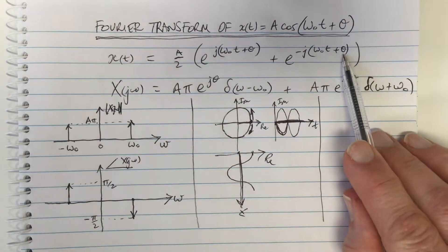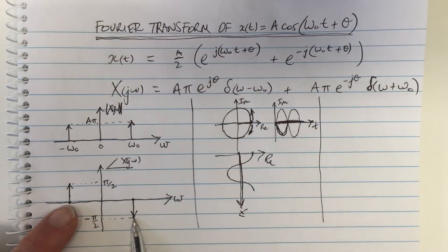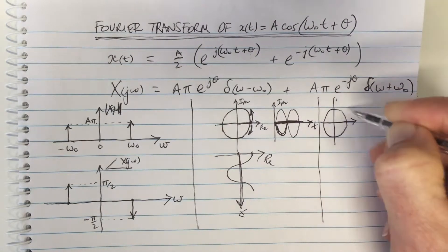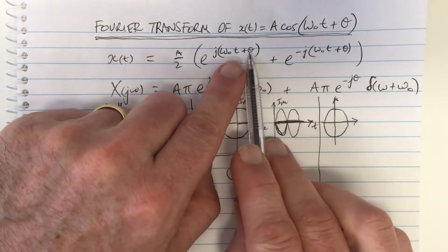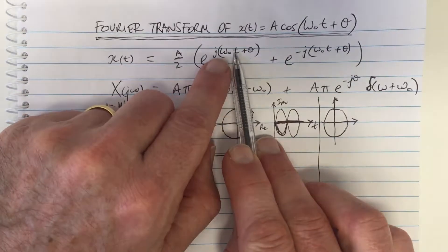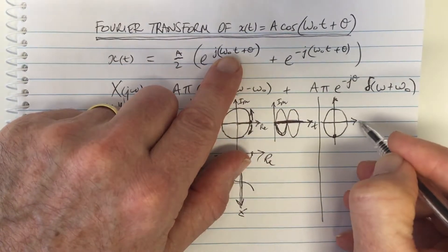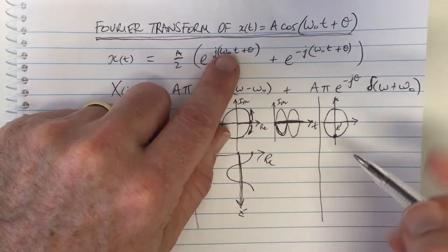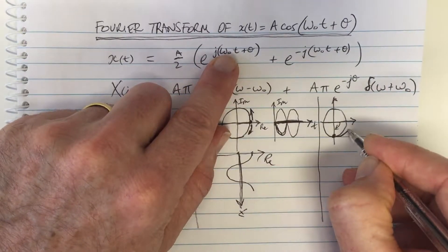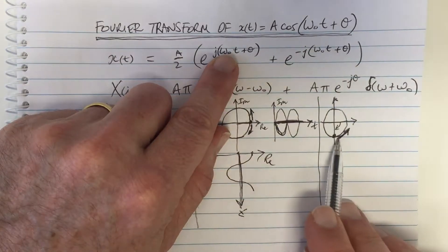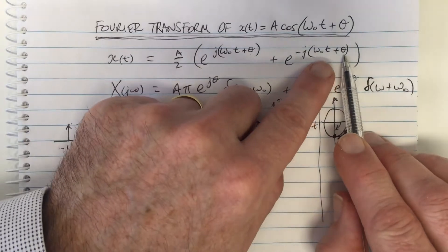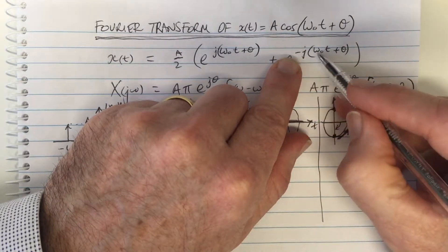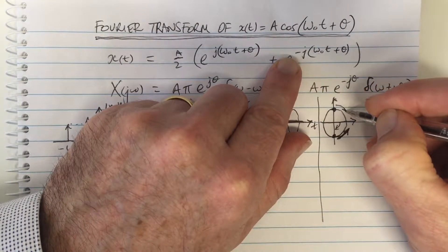So this is what happens when theta equals zero — nothing in the imaginary, and as we expect, we get a cosine waveform in the real. Now let's think for theta equals minus pi over 2. What does minus pi over 2 mean? This term starts, when time equals zero, down at minus pi over 2. Since it's the positive omega_0, when time increases it moves around the circle in the positive direction. The other term starts at positive pi over 2, but because it's a negative frequency, it moves in the opposite direction.